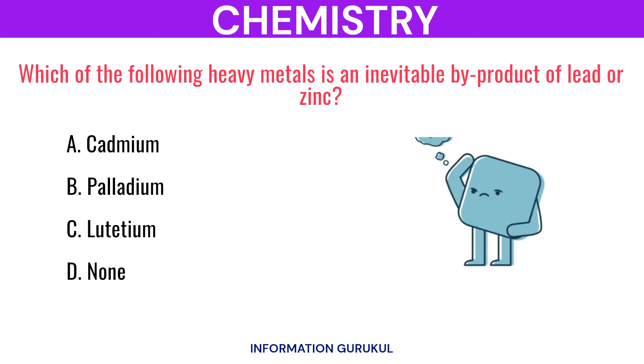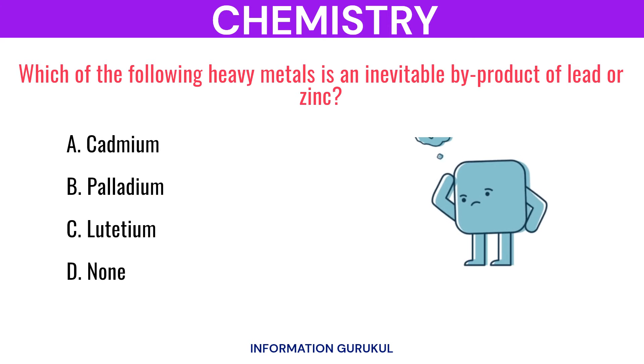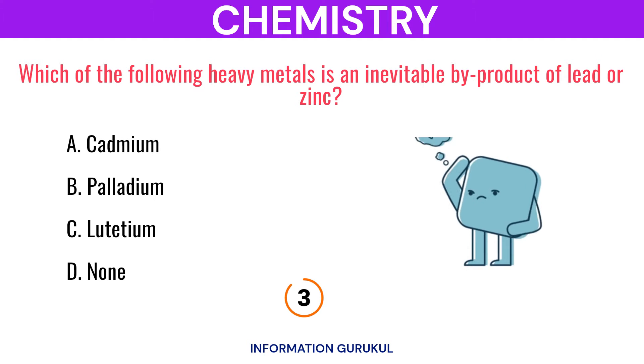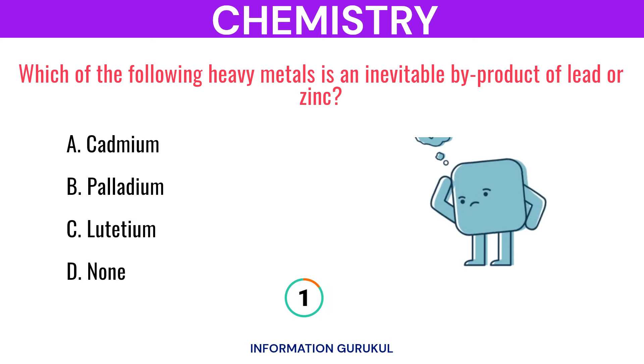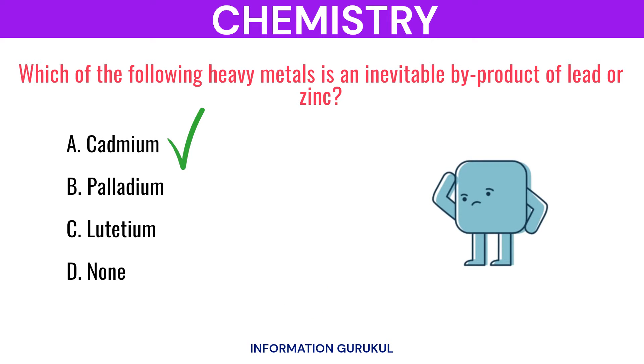Which of the following heavy metals is an inevitable by-product of lead or zinc? Cadmium.